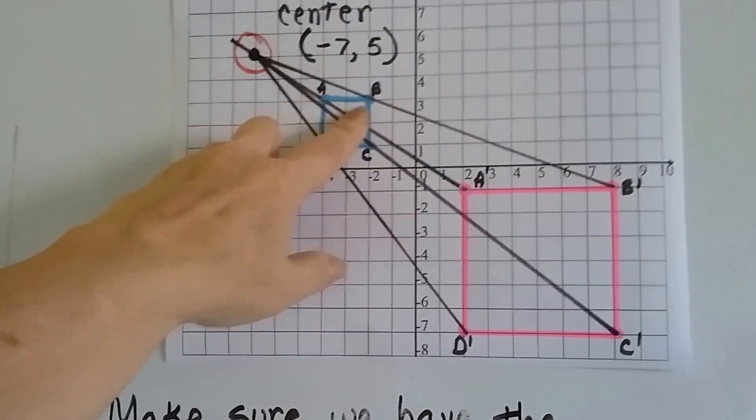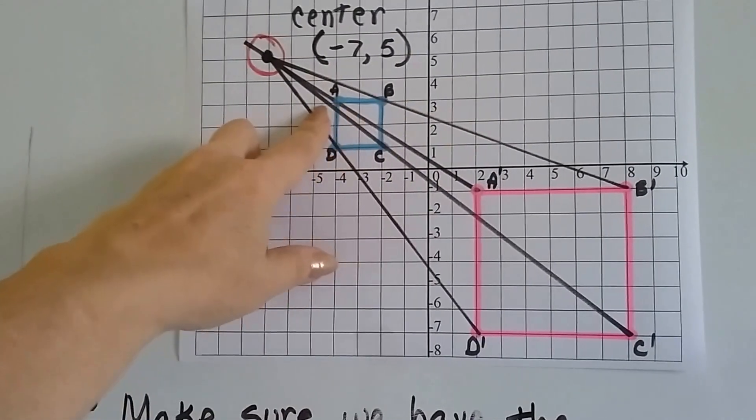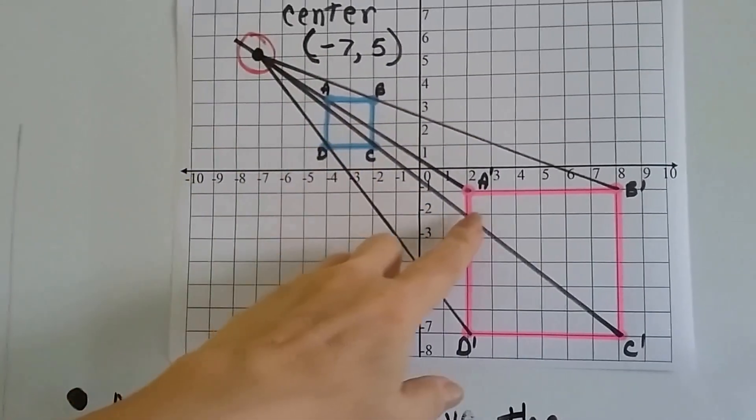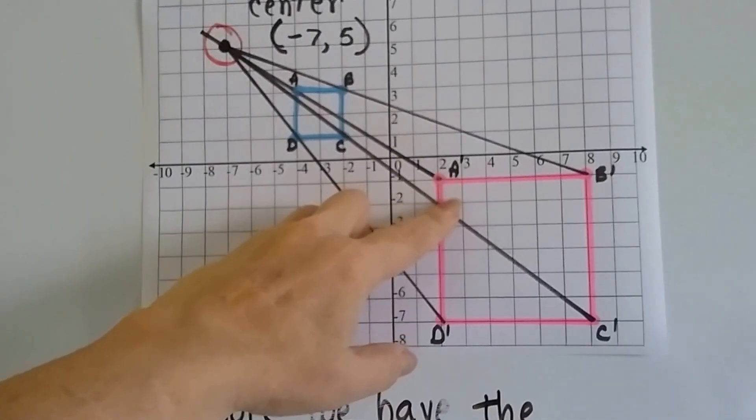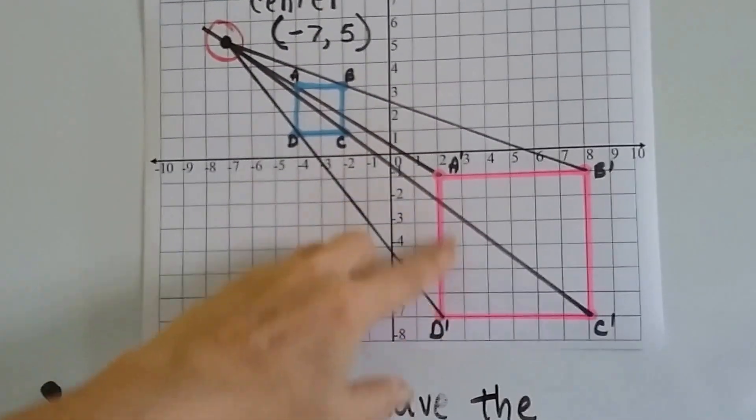The original image was only two units across and two units down. And this one is 1, 2, 3, 4, 5, 6 units across and 1, 2, 3, 4, 5, 6 units down.